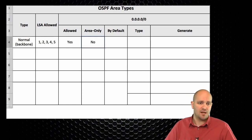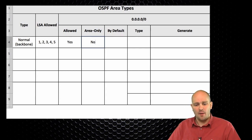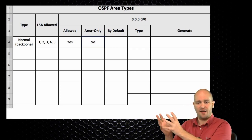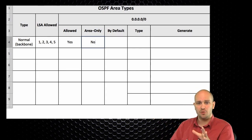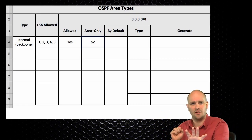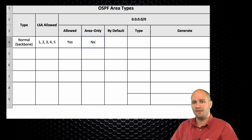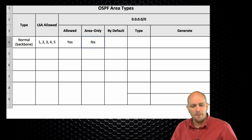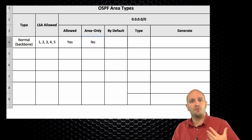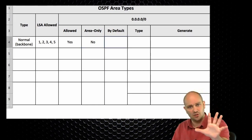For example, if you have area 0 and area 5 both as normal areas, you cannot say 'inject the default route into area 5 but not area 0.' You cannot do that easily — it's not supported natively by just creating the area and specifying default route injection into it.